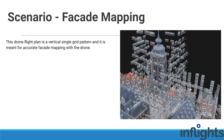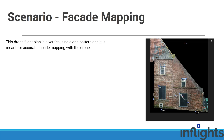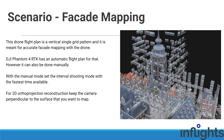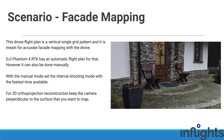For the facade mapping scenario, this drone flight plan is a vertical single grid pattern meant for accurate facade mapping with a drone — for example, for an accurate 2D ortho projection image. DJI Phantom 4 RTK has an automatic flight plan for that; however, this can also be done manually. With manual mode, remember to set the interval shooting mode with the fastest time available. Keep the camera perpendicular to the surface if the main goal is a 2D ortho projection image. For 3D model reconstruction, add additional images with a slight angle — this will provide more detail to reconstruct complicated shapes like areas around windows and doors.